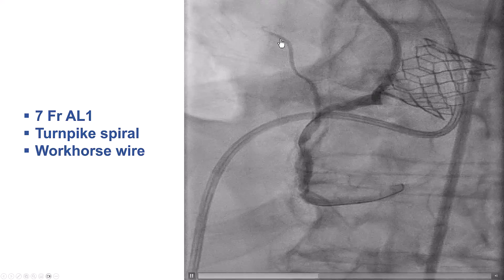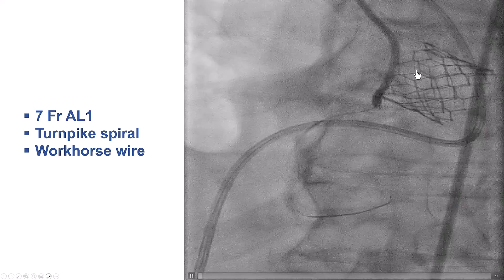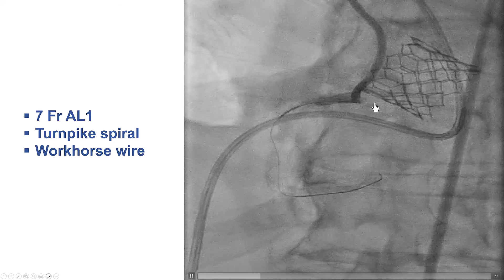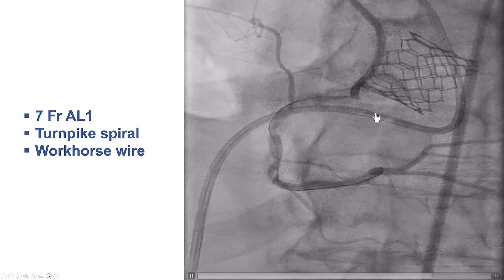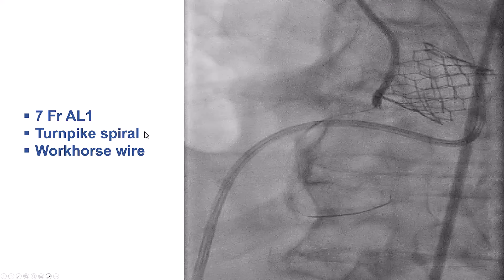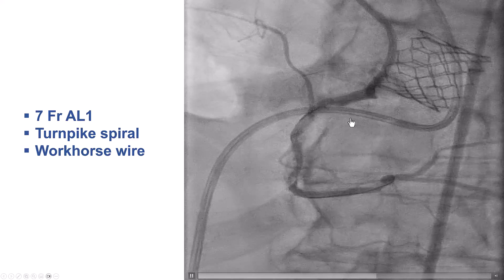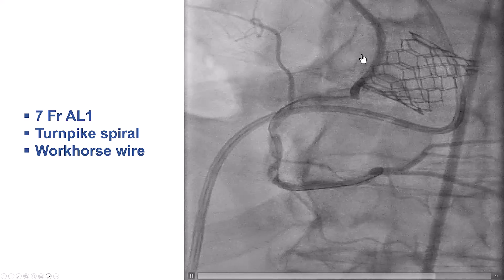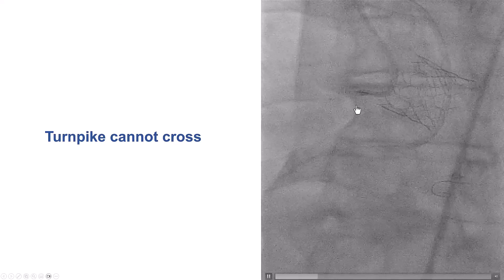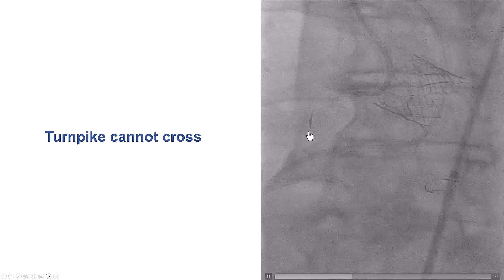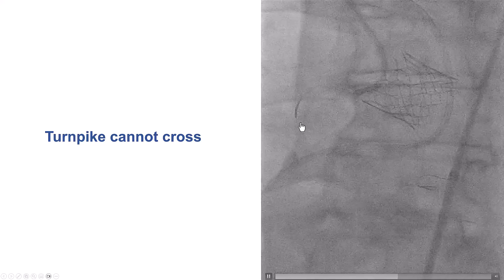We engaged the right coronary artery with a 7 French AL1 guide, using femoral access with a 45-centimeter long sheath. We had difficulty wiring through the area of calcium, so we used a Turnpike Spiral microcatheter along with a workhorse Minamo guide wire. We were able to advance the wire to the distal right coronary artery; however, the microcatheter could not advance. We switched to another microcatheter but still could not cross through the mid right coronary artery.